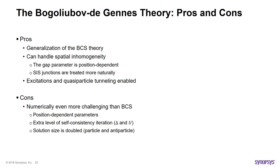To sum up, we saw that the Bogoliubov-de Gennes theory generalizes the BCS theory very elegantly, and can handle spatial inhomogeneity as well as excitations and quasi-particle tunneling in a much more direct way. The only drawback is that of numerical complexity. Not only are parameters and fields position-dependent now, but there is an extra layer of computation that is needed to achieve self-consistency. Moreover, the solution size is now doubled, as we need to solve for particle and antiparticle states separately.